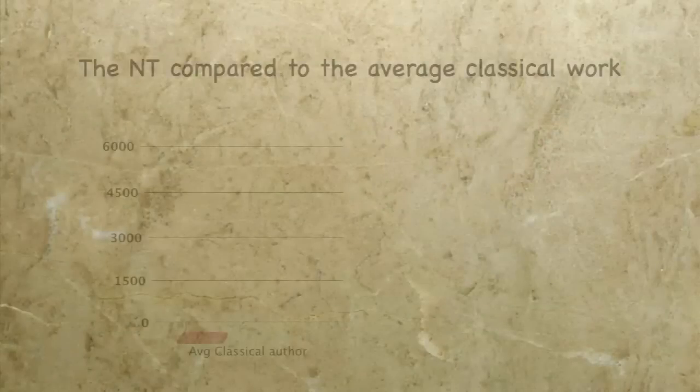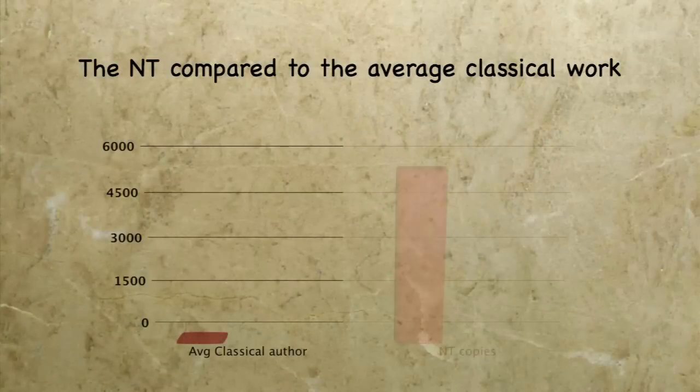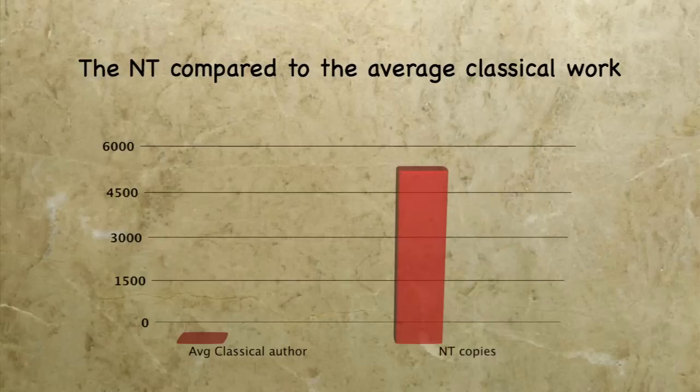Giving a generous estimate of 20 copies, if you were to stack those literary remains up, how tall would it be? On average, it would end up being about four feet high. Now take the New Testament manuscripts in Greek and all the ancient versions. How high would that stack be? That would be closer to about a mile high. It's a huge difference between these ancient Greco-Roman authors and their literary remains and what we have for the New Testament.